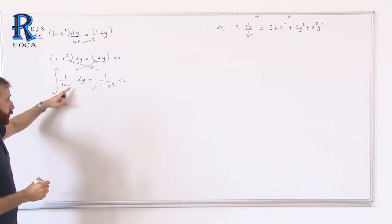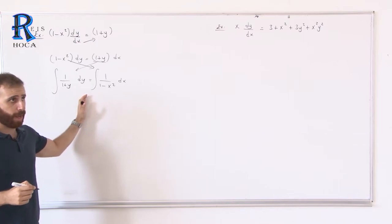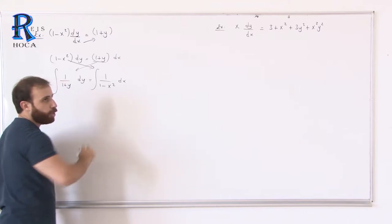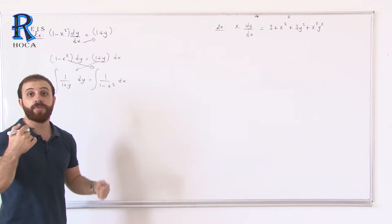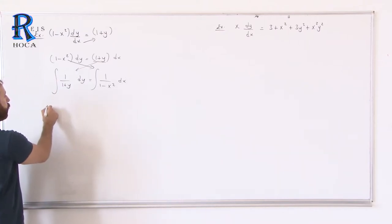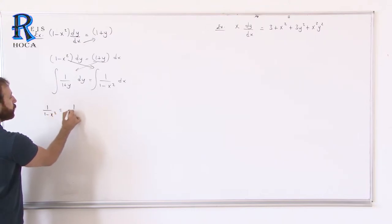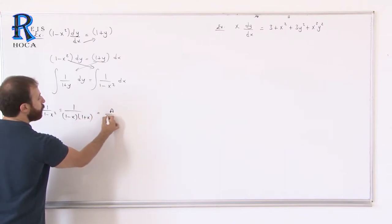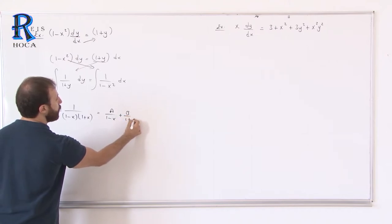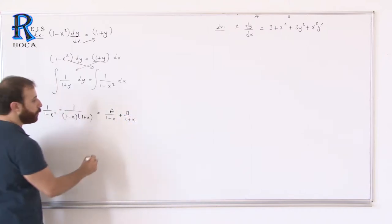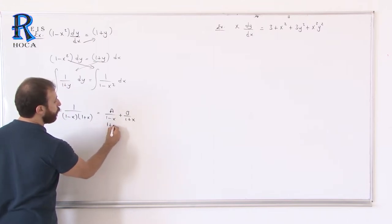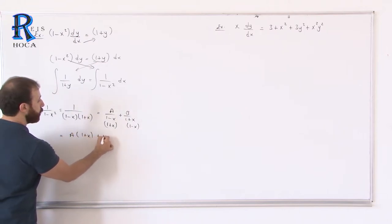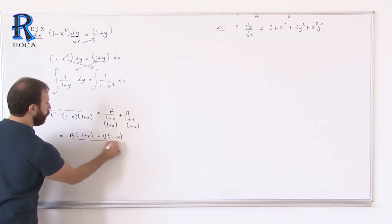Let's take the integral. The left side, 1 over (1 plus y), is easy — it gives ln|1 plus y|. But the right side is not easy. For 1 over (1 minus x squared), we can factorize the denominator: 1 minus x squared equals (1 minus x)(1 plus x). That's why we should use partial fractions: A over (1 minus x) plus B over (1 plus x).